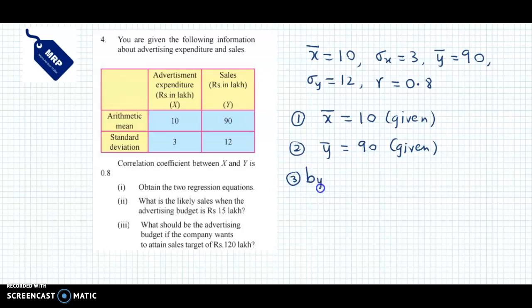Then we look at regression coefficients. First we look at byx. The byx formula is r × σy/σx. r is 0.8, which is 8/10, times standard deviation of y which is 12, over standard deviation of x which is 3. We cancel, 3 into 4 is 12, 4 times 8 is 32 divided by 10. byx value is 3.2.